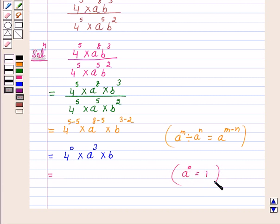So by using this law of exponents we have this is equal to 1 into a cube into b and this is equal to a cube b.